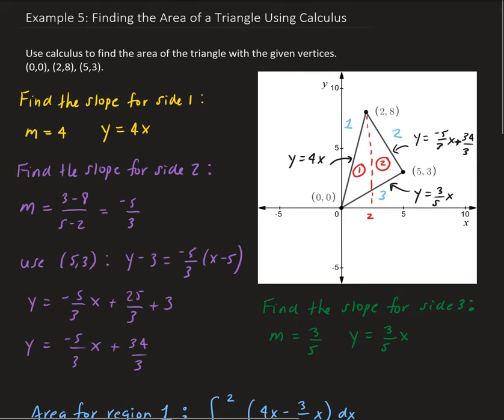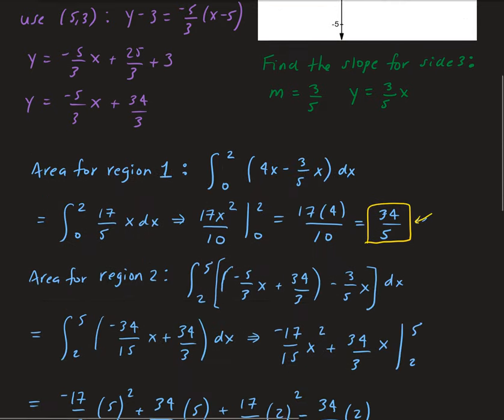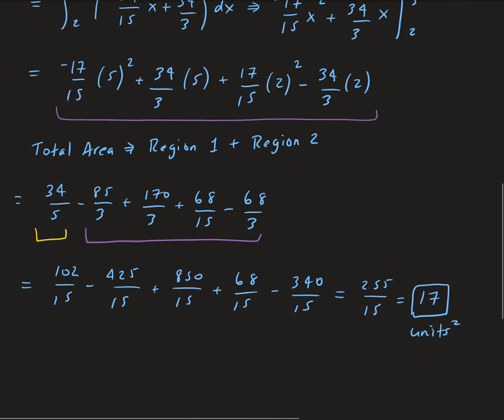To summarize: we found the equation for each line segment by finding the slope of each side. We found the area of the first region by integrating (4x − 3/5·x) from 0 to 2, and the second region by integrating (−5/3·x + 34/3 − 3/5·x) from 2 to 5. Adding those together gives a total area of 17 square units.